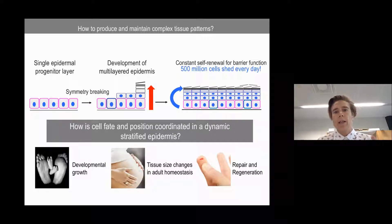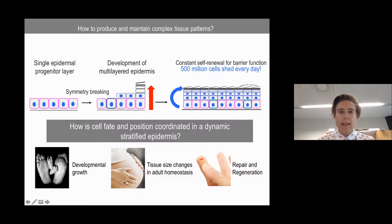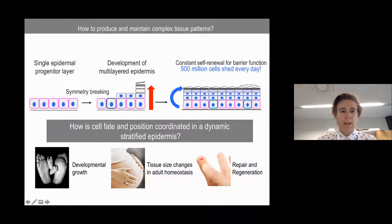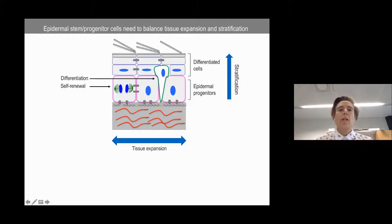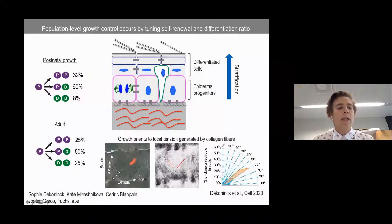This raises the question: how do you coordinate cell fate decisions and the position of cells within the structure? And how do you do it in a situation that is highly dynamic? Skin is actually one of the few tissues that continues to change its size during adulthood. Cells need to be dynamic and change their behavior all the time, and injuries need to be rapidly repaired. The question is how do stem cells — the only dividing cells — coordinate self-renewal versus differentiation.